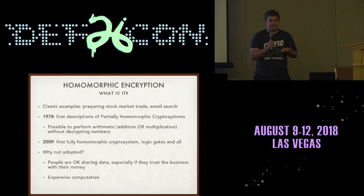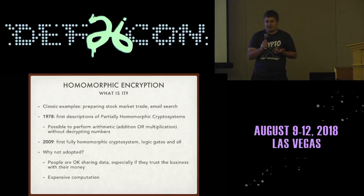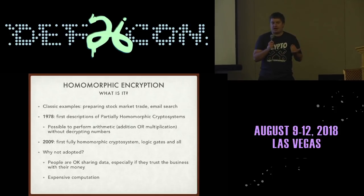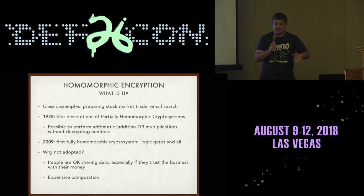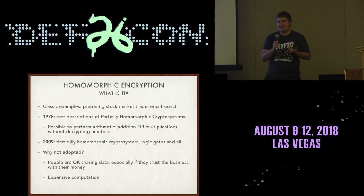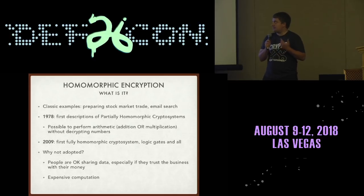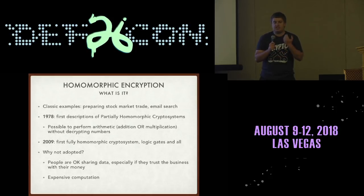There are two classical examples. First, a stock example: say you're about to sell many thousands of dollars of stock, and there are different fees incurred by different people in your supply chain. But the moment you say 'I'm going to sell $3,000 of this stock,' other people — high frequency traders — start speculating against you. So the concept is: you send the number encrypted, they do math on it encrypted, and then you decrypt the result on your side.